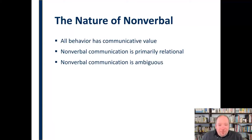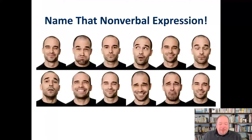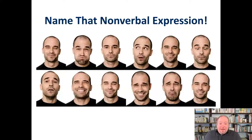Nonverbal communication is also ambiguous — it's oftentimes vague and can be interpreted in a variety of ways. So as we focus on interpretation as part of the listening process, we need to remember that nonverbal communication itself is ambiguous. If I asked you to identify what a particular facial expression means, some might be clear, but many are much more vague and can be approached from a lot of different directions. We need to bear in mind that nonverbal communication is really hard to pin down specifically.